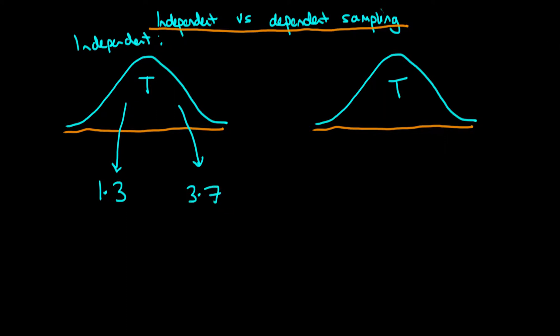The idea with independent sampling is that the only connection that these two values have with one another is through their joint dependence on T. Apart from that shared connection that they both come from the same distribution T, there is no additional link between these two.